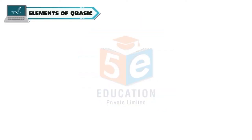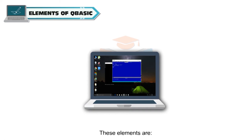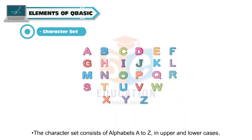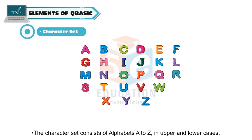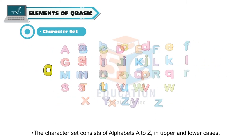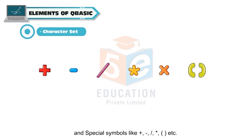QBasic is made up of some basic elements. These elements are character set, constants, variables, operators and statements. The character set consists of alphabets A to Z in upper and lower cases, numbers 0 to 9, and special symbols like plus, minus, forward slash, asterisk, brackets, etc.